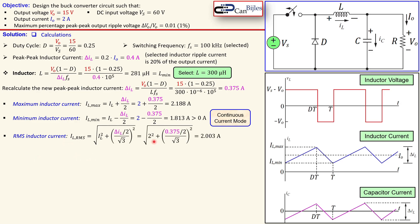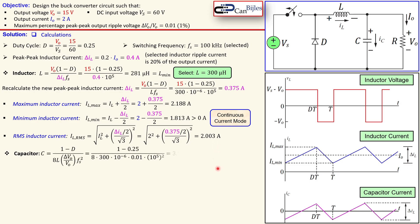The RMS inductor current is calculated by integrating over the triangular waveform. The expression includes the average inductor current and the peak-to-peak inductor current divided by two, divided by the square root of three, all squared and summed. Substituting the values yields an RMS inductor current of approximately 2.003 amps.